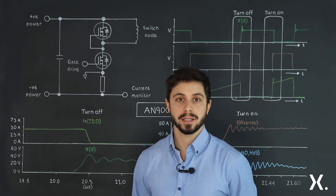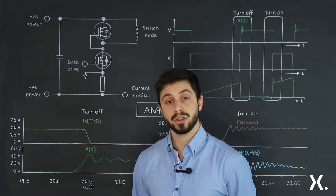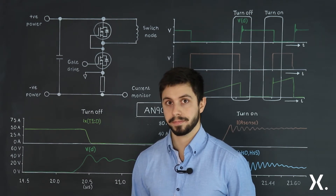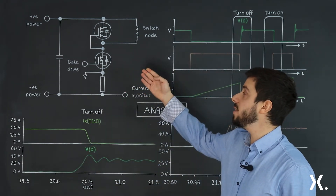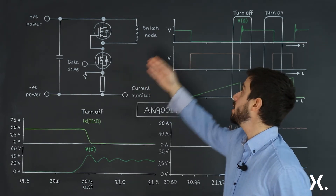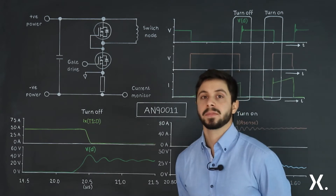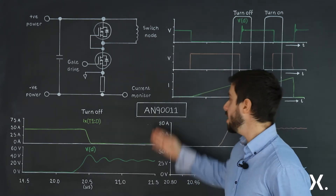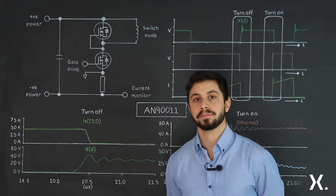Double pulse testing can help you determine EMC and switching efficiency and whether they are within agreeable ranges. Behind me there is a simplified schematic of the double pulse circuit as well as the relevant waveforms. This is based on the Nexpera application note AN90011, so please go and check it out.